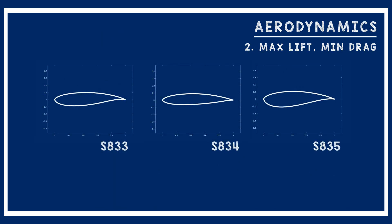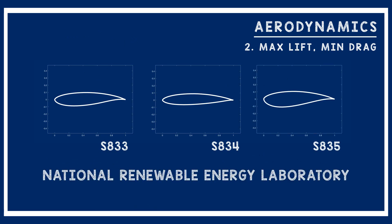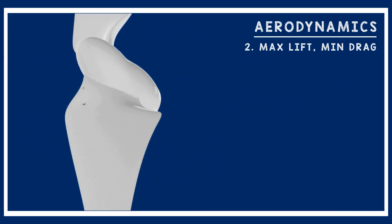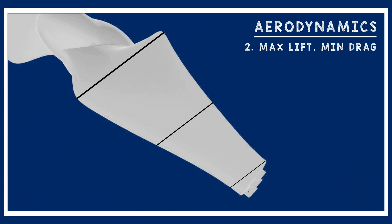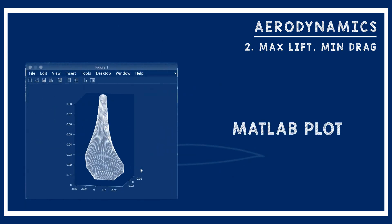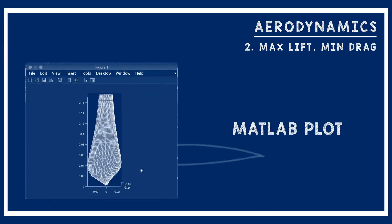One series of airfoils satisfying all these requirements is the S-Series, specifically developed by the National Renewable Energy Laboratory for wind turbines. Initially we decided to use three sections for the root, middle, and tip of the blade, each optimized for its region. After brief analysis, we found the weight of using three different sections was excessive without much aerodynamic benefit, so we chose to use just the S834 tip section, which has the highest CL to CD ratio. We designed the twist of the blade to meet the corresponding angle of attack along the span.